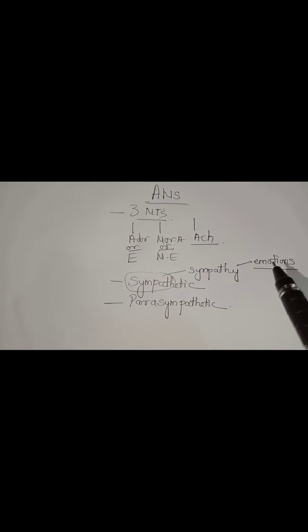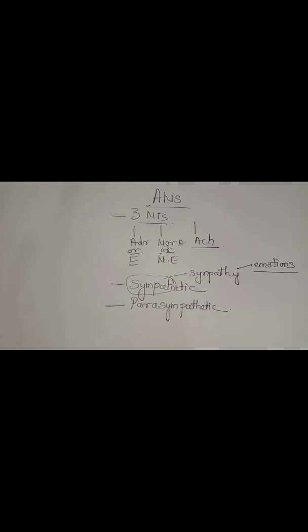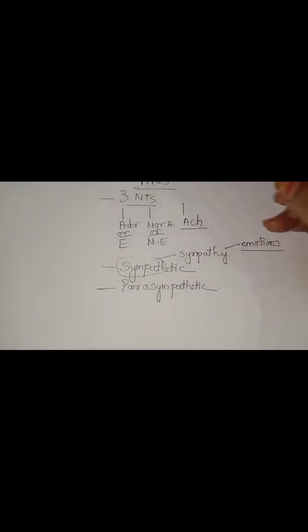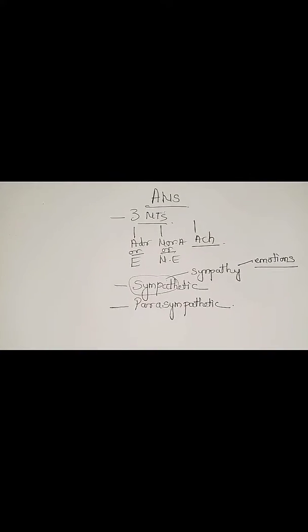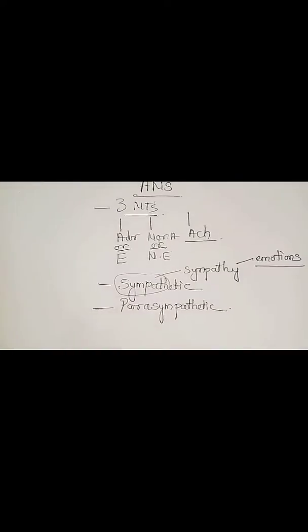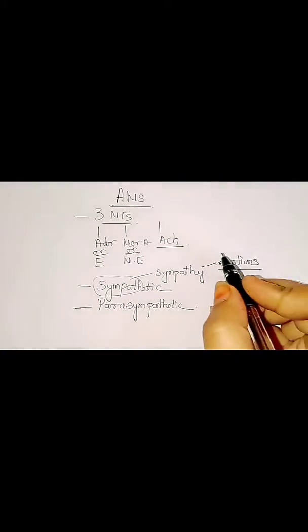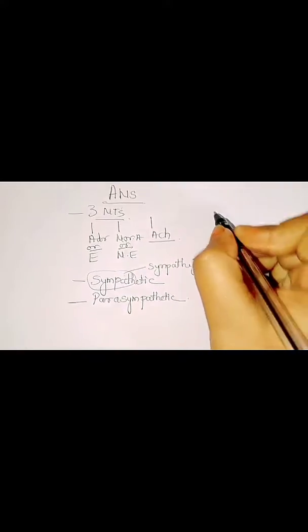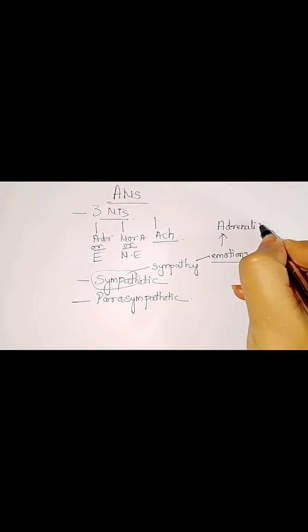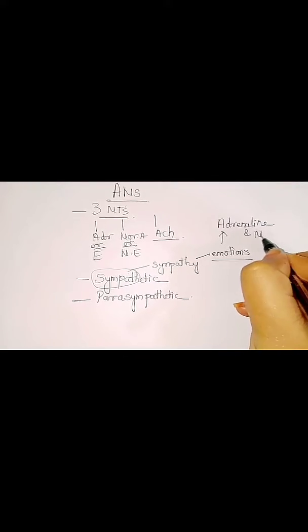So here is the simple trick: the sympathetic system is related to emotions, and emotions are nothing but our sudden actions. The sympathetic system is related to sudden actions. The neurotransmitters which act here for the sympathetic nervous system are adrenaline and noradrenaline.